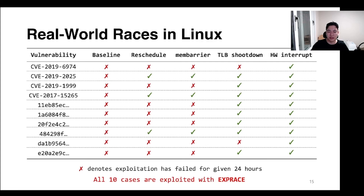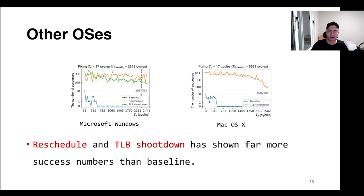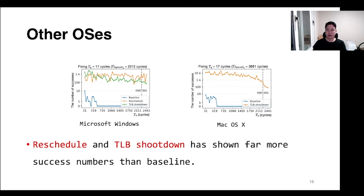All 10 vulnerabilities that are considered hard to exploit by general brute-forcing have been exploited with EXPLaCE. And in order to check the effectiveness of exploiting other OSes using EXPLaCE, we launched exploitation against synthetic vulnerabilities developed as a kernel driver for Windows and macOS respectively. Overall, reschedule and TLB shootdown interrupts showed far more success than the baseline, demonstrating the exploitation effectiveness of EXPLaCE.